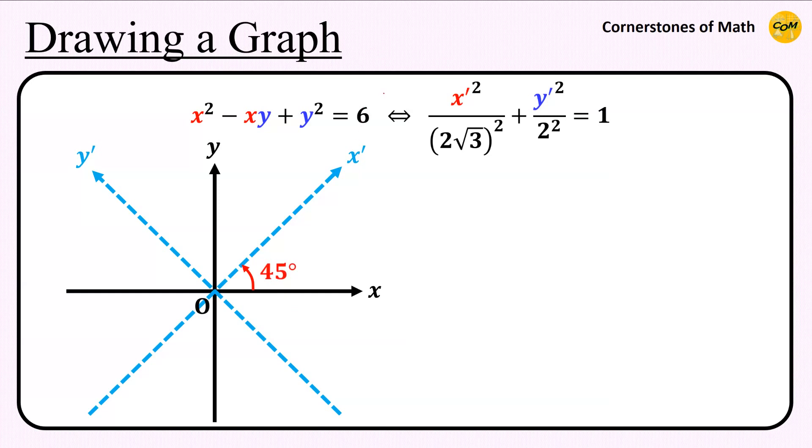Then, using those axes as a new reference, draw an ellipse having semi-major axis of 2 square root of 3 and semi-minor axis of 2. And this is the graph of the given equation. And this is the graph drawn by Desmos graphing calculator.